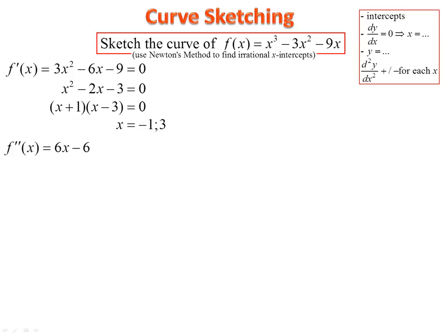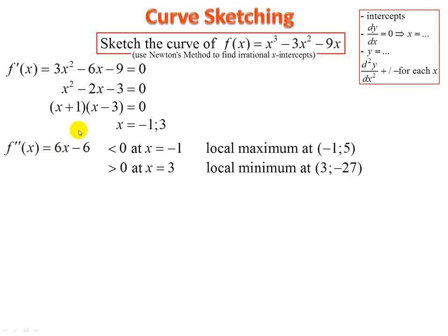Find the second derivative by differentiating the first derivative. Investigate whether negative one gives a positive or negative second derivative — substitute negative one in. You do not need to show this working; you could do it on your calculator. Six times negative one minus six gives a negative, so that means a local maximum at negative one. Substitute negative one into the original and get five. At x equals three, substitute into the second derivative — we get a positive, so local minimum at three. Substitute into the original to get negative twenty-seven.